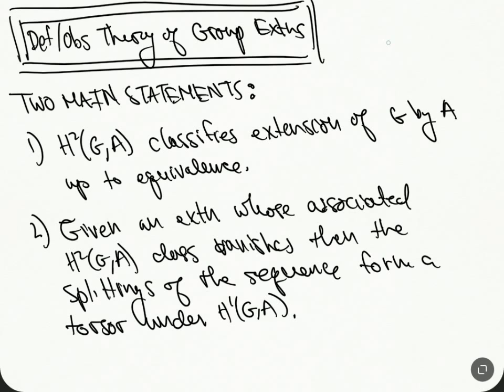For this statement, in the framework that I know it, A needs to be an abelian group. What I also want to say is, before going into this, what the hell did I want to say?